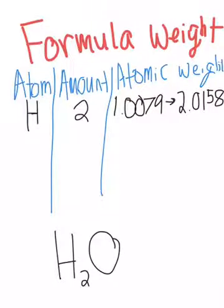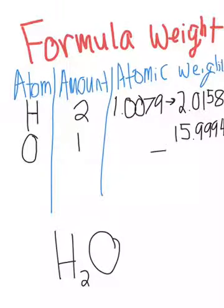Next is the oxygen atom, and there's only one because there's nothing in subscript next to the O. So there is one oxygen atom, and the atomic weight is 15.9994. Since there is only one, we don't have to multiply it by anything. Next, we're going to add the two together, and we're going to get 18.0152.